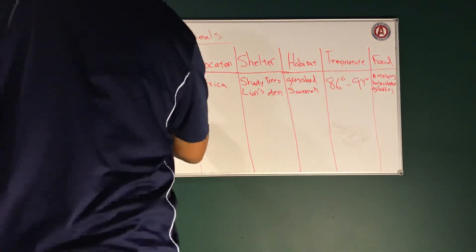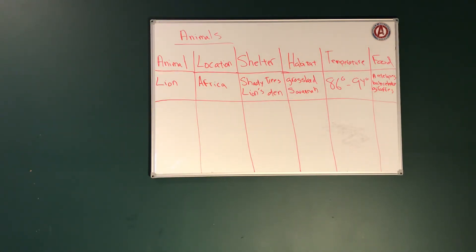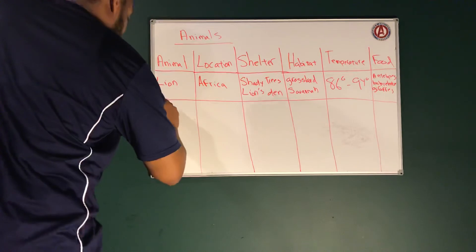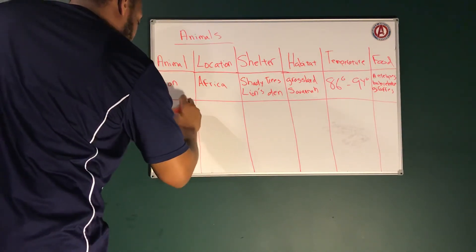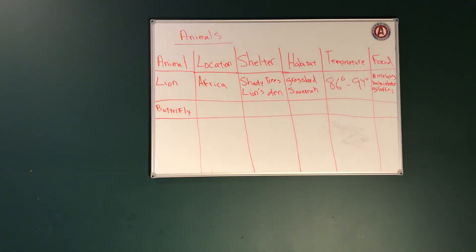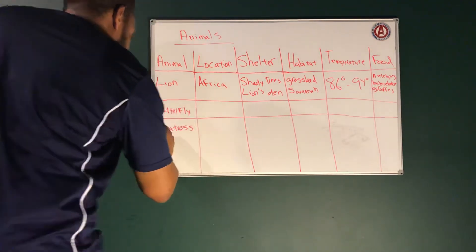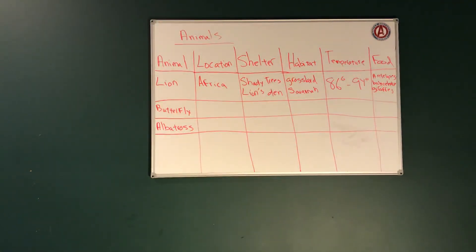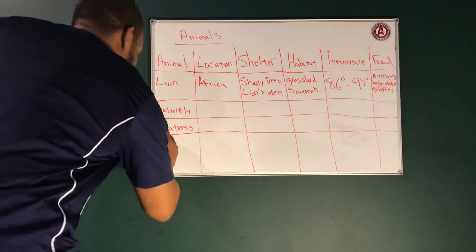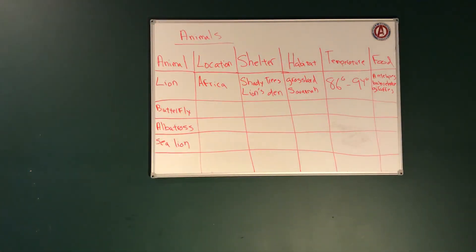What you're going to be submitting to me in Google Classroom today is going to cover some separate animals. You're going to tell me what the animal's habitat is, what the animal's location is, what is the temperature, the food, and the shelter. The first animal is going to be a butterfly. Our second animal is going to be an albatross. Our next animal is going to be a sea lion. And our last animal is going to be a bullfrog.